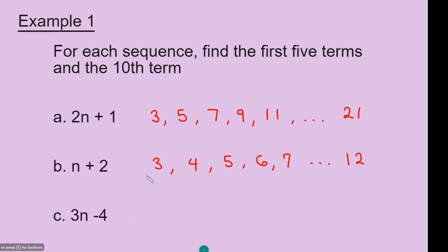For the third question, to find the first number in the sequence, n will be 1. So 3 times 1 is 3, minus 4 gives minus 1. The second number: n will be 2, 3 times 2 is 6, minus 4 is 2. The third number: n will be 3, so 3 times 3 is 9, and 9 minus 4 gives 5.